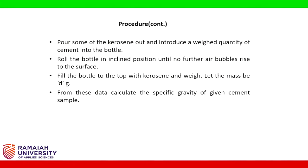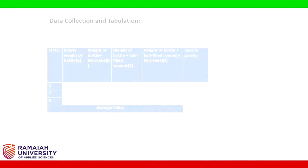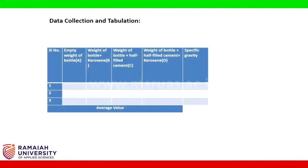Pour some kerosene out and introduce a weighed quantity of cement into the bottle. Roll the bottle in an inclined position until no further air bubbles rise to the surface. Fill the bottle to the top with kerosene and weigh; let the mass be D grams. From these data, calculate the specific gravity of the given cement sample using the equation as shown. Data collection and tabulation is as shown in the table.